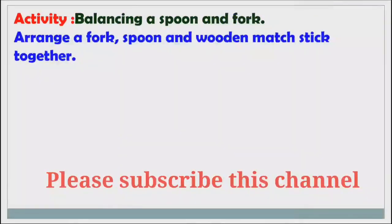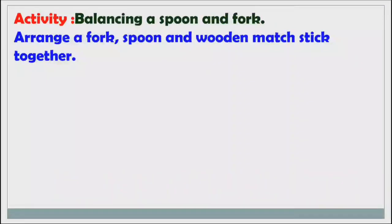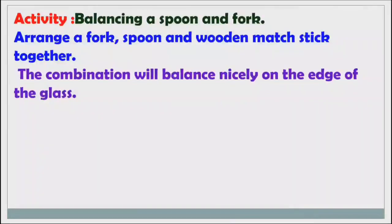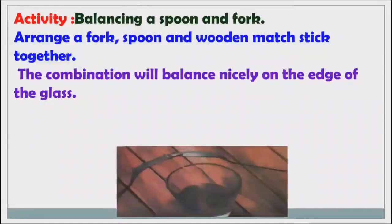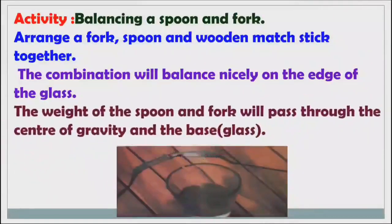Now we will see another activity: balancing a spoon and fork. Arrange a fork, spoon, and wooden mastic together — the combination will balance nicely on the edge of a glass. The weight of the spoon and fork passes through the center of gravity and the base of the glass, so it is nicely balanced.